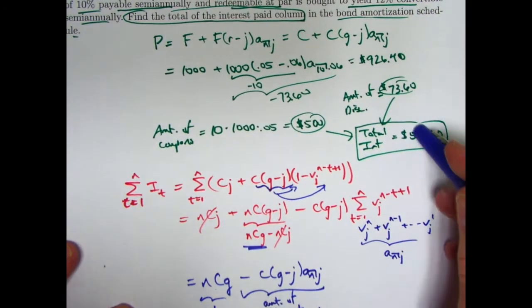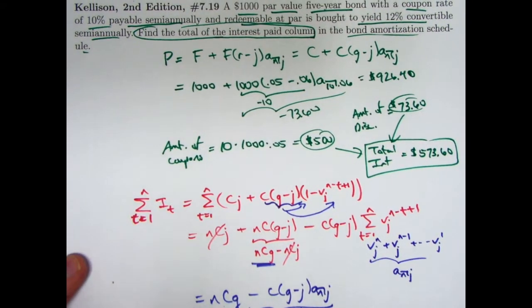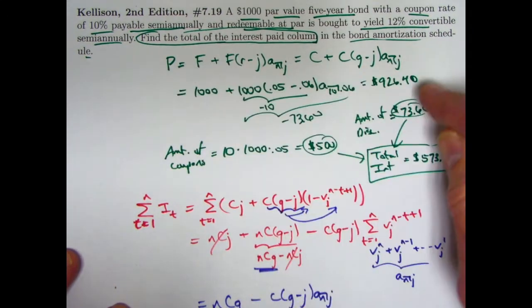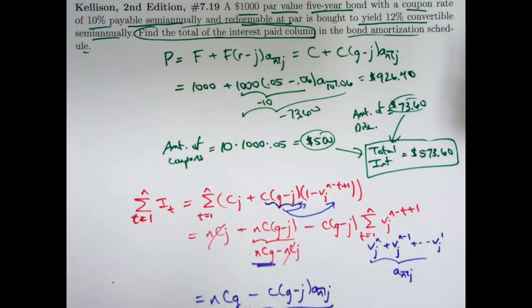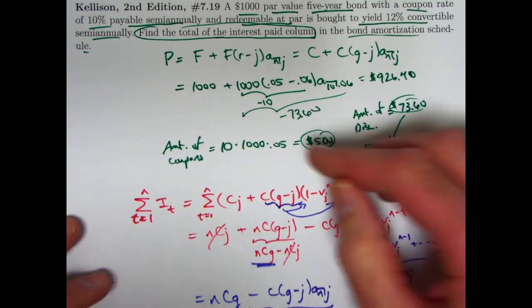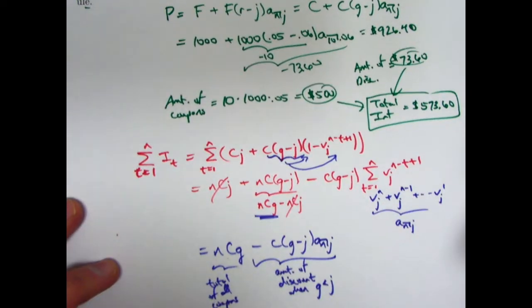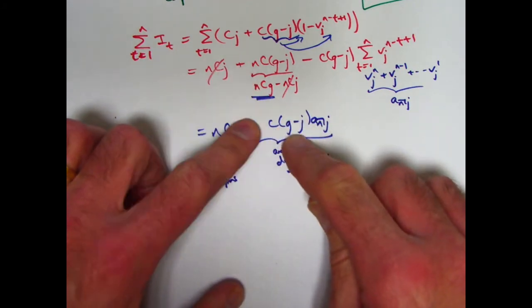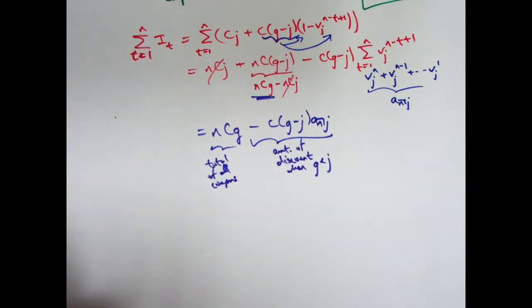Let's just briefly, before we end the video, think about what would happen in the context of a bond bought at a premium. G would be bigger than J. This would be positive. The price would be more than a thousand. The amount of the premium is not interest. The coupon payments cover more than interest. They write the bond book value down. The amount of interest paid would be the amount of the coupons, then minus the amount of the premium. It would be a subtraction of a positive number minus a positive number. Down here, we really would be subtracting a positive number. In that case, this would be this part without the minus sign would be the amount of the premium. The total interest paid, again, would be the total of all the coupons minus the amount of the premium in that situation.